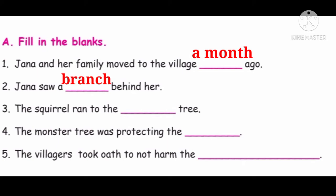Third question: the squirrel ran to the dash tree. Squirrel வந்து ஓடிபோச்சி, எங்க ஓடிபோச்சி? Monster tree கிட்ட. The squirrel ran to the monster tree.